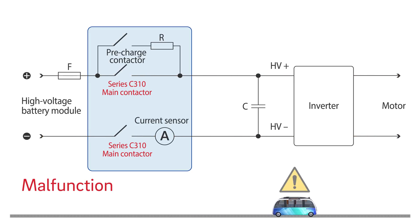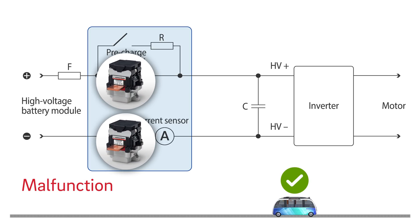If a malfunction occurs, such as thermal overload, a short circuit or an accident, both main contactors disconnect the battery from the vehicle's high voltage electrical system galvanically and electrically. Current can no longer flow.